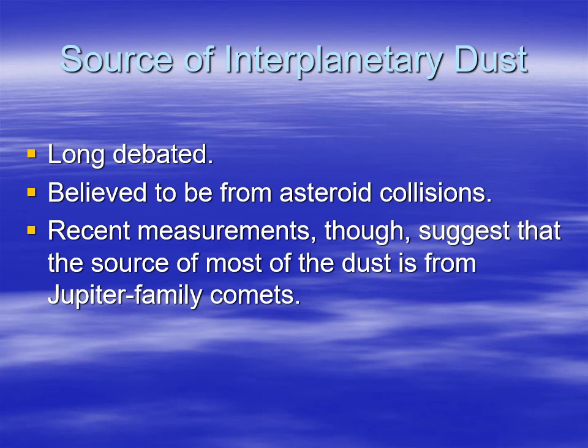Long ago, they believed that most of the interplanetary dust was from asteroid collisions. But recent measurements indicate that some of it is actually dust given off by comets. Some comets dive close to the sun, and Jupiter's gravity grabs them into short-duration comets, and they just keep dumping dust out there. So some of it is probably due to asteroid collisions, and a lot of it is probably due to being shed by comets.